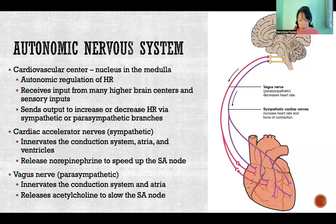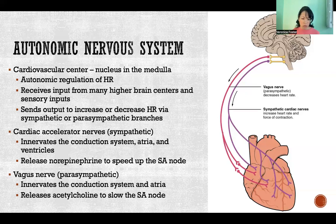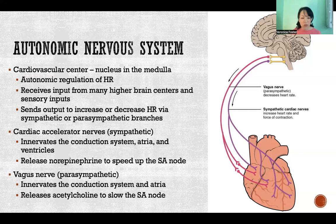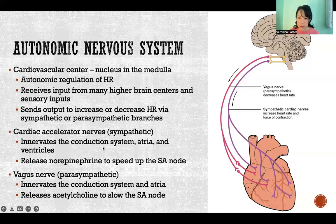The opposite — the parasympathetic output — would be the vagus nerve, cranial nerve number 10. It also has an origin at the cardiovascular center, goes down to the heart, and innervates the conduction system, meaning the sinoatrial node and the atria. It releases acetylcholine as its neurotransmitter to slow the SA node. Anytime our heart is beating at fewer than 100 beats per minute, it's because the vagus nerve is acting to slow it down. That's why we might use techniques to stimulate the vagus nerve — it can help slow our heart rate, soothe our nervous system, and stimulate more of a parasympathetic response. The vagus nerve, not only to the heart but to many organs of the body, carries a large amount of our parasympathetic stimulation throughout the body.